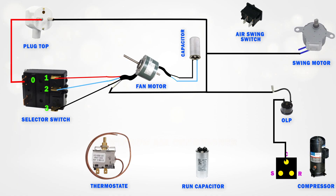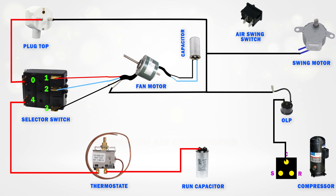From terminal 4 of the selector switch, connect a wire to the input terminal of the thermostat. From the output terminal of the thermostat, connect a wire to one terminal of the run capacitor. Then, from that same terminal, loop a wire to the run R terminal on the compressor. From the second terminal of the capacitor, connect a wire to the start S terminal of the compressor.